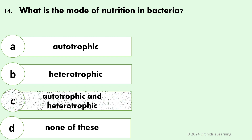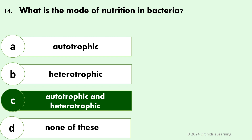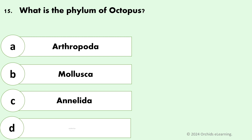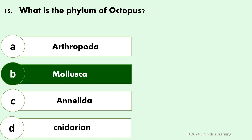Answer: C — Autotrophic and heterotrophic. What is the phylum of octopus? Answer: B — Mollusca.